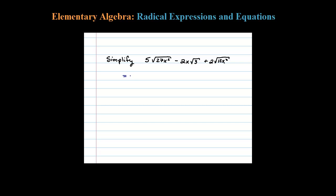Here we're asked to simplify. Before I do that though, I'm going to rewrite 27 as 9 times 3 times x squared, minus 2x square root of 3, plus 2 times... now 12 I'm going to write as 4 times 3 times x squared.